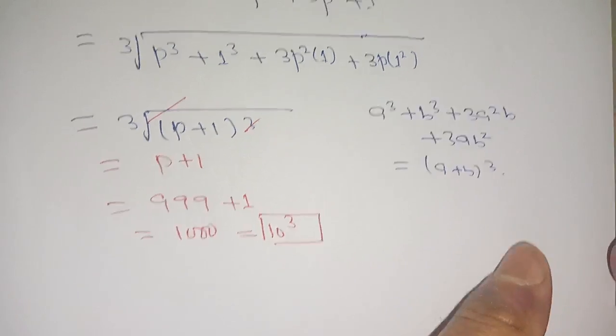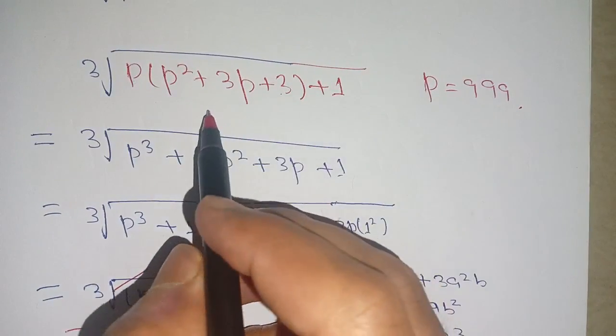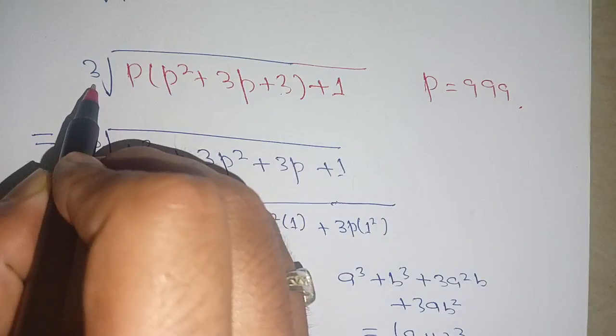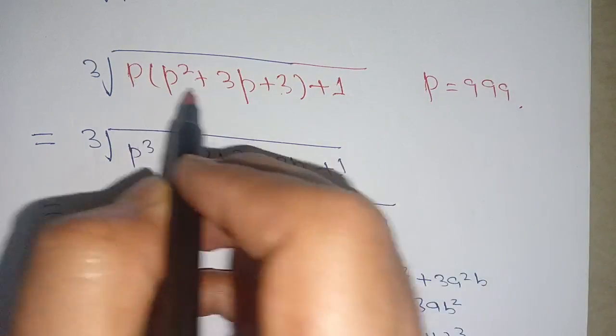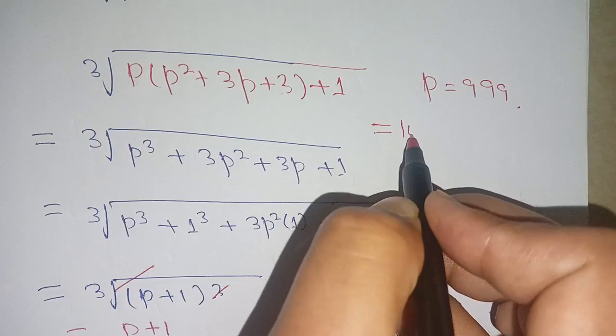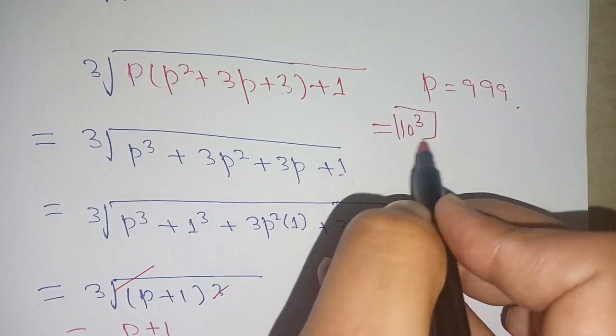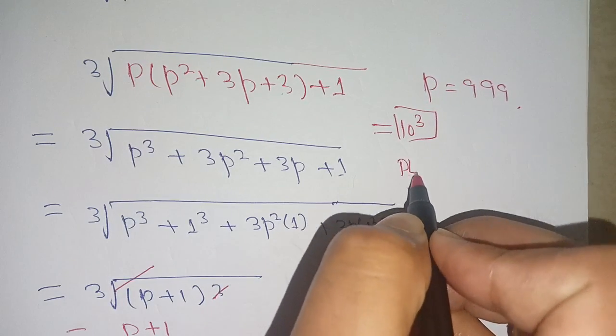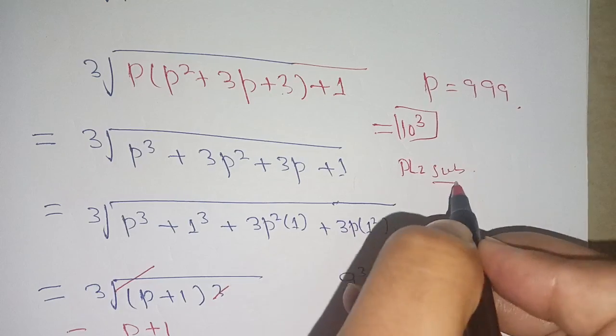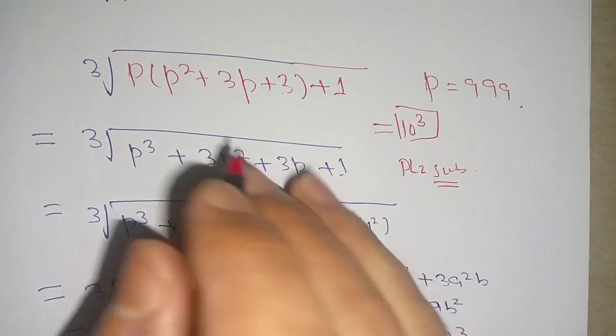For p equals 999, the answer is 10³. This is today's problem. If you are new here, make sure to subscribe to our channel for more such videos. See you in the next video, till then bye.